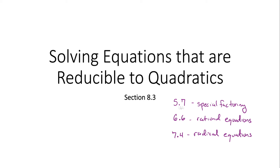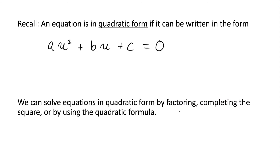But in 5.7, when we saw these types of equations, we really only looked at how to factor them. We didn't look at how to solve any of those equations, so we're going to look at solving some of them now. An equation is in quadratic form if it can be written in the form AU squared plus BU plus C equals zero.